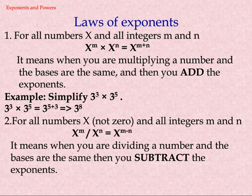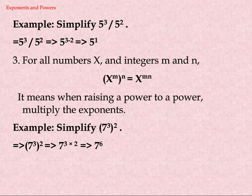Law 2: For all numbers x (not 0) and all integers m and n, x^m ÷ x^n = x^(m−n). It means when you are dividing a number and the bases are the same, you subtract the exponents. Example: simplify 5 power 3 over 5 power 2. 5^3 ÷ 5^2 = 5^(3−2) = 5^1.